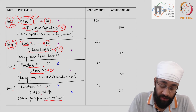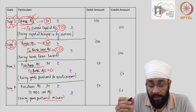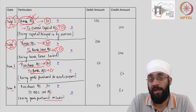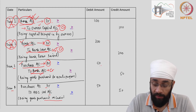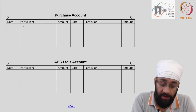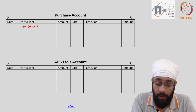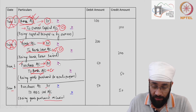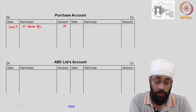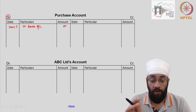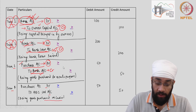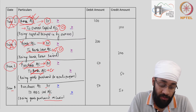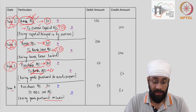Let us go to transaction 3. Bank account has already been taken care of. We need to look at purchase account — purchase account is being debited, so we go to the debit side of purchase account and write 'To Bank Account, 50'. We go to purchase account, write 'To Bank Account' and 50. Transaction 3 has been posted in both the bank account and the purchase account. I'm crossing it off.